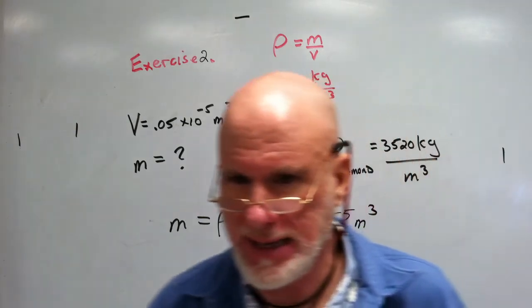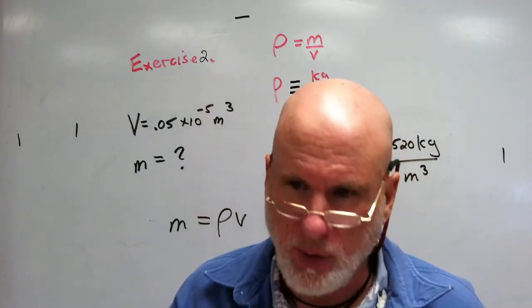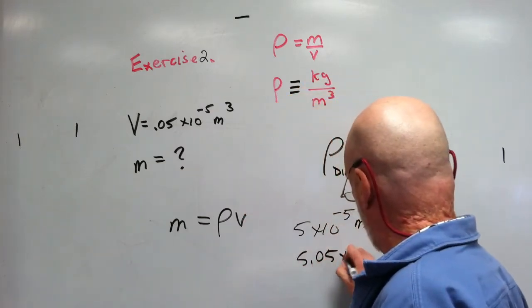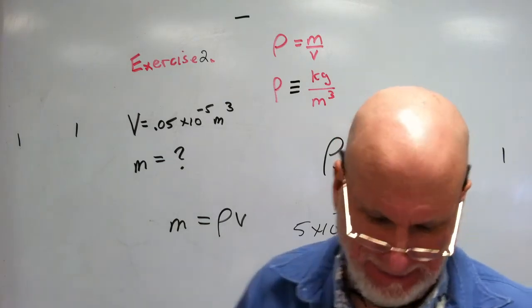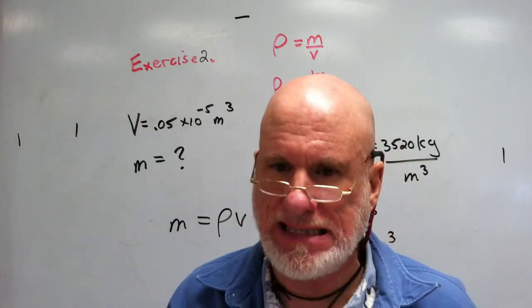Okay? You get that? Now, the water level rises to 5.05 times 10 to the negative 5 cubic meters. Correct? What's the mass of Virginia's diamond?